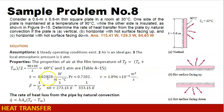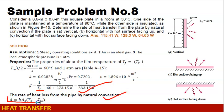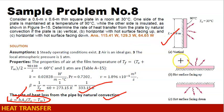Our volumetric coefficient of expansion is the reciprocal of the film temperature in Kelvin. For the rate of heat loss by natural convection, we will use the standard formula. We will solve for the convection coefficient H for each case, since we already have the surface area, surface temperature, and fluid temperature. Each case has a different Nusselt number and therefore a different convection coefficient.